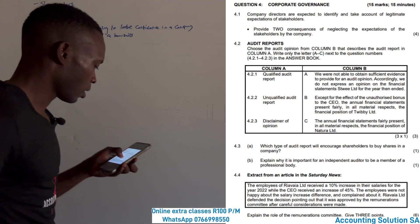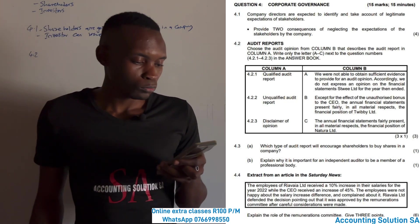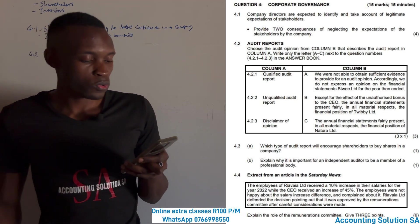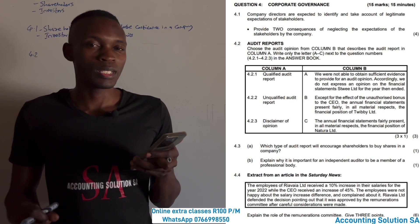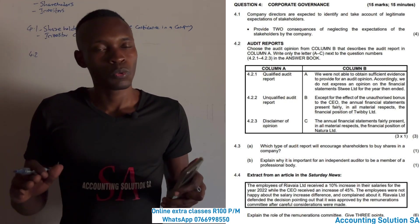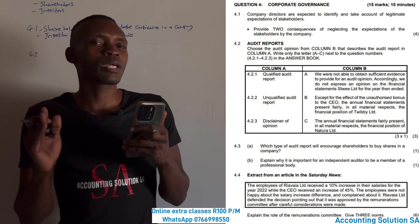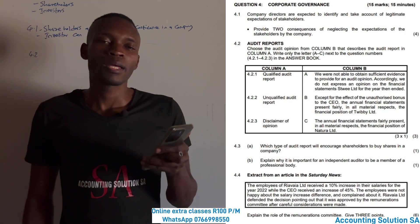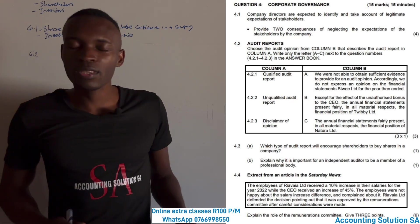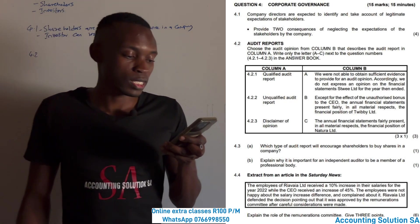Question 4.2 is about audit reports. We have to match Column A and Column B. We have qualified, unqualified, and disclaimer — we have to match them. Unqualified is a good report with no issues. Qualified has some issues, but it's okay — there are some issues that need to be fixed. The worst one is disclaimer of opinion: that means reckless management, a lot of corruption, everything done wrong, not even according to accounting standards.